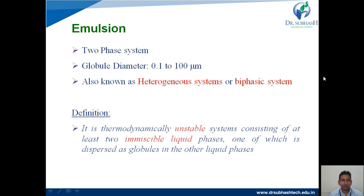One of which is dispersed as a globule in the other liquid. The likeness between oil substances as well as the likeness between aqueous substances is higher, so that is why we can say emulsion is thermodynamically unstable.